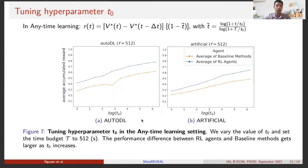In anytime learning, the hyperparameter T0 controls how important performance improvement at the beginning of an episode is. Figure 7 shows how the average accumulated reward changes as T0 varies in both the AutoDL and artificial meta-datasets. The X-axis shows T0 in log scale and the Y-axis shows average accumulated reward. The blue line shows the average of RL agents while the orange line shows the average of baselines. RL agents consistently outperform baseline methods, and the performance difference increases as T0 increases, indicating that RL agents can adapt their strategy to outperform baselines.